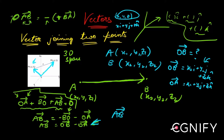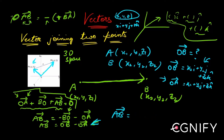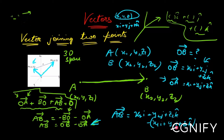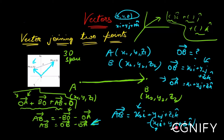What we need is AB bar, which is the difference OB bar minus OA bar. That is: (x2·i + y2·j + z2·k) minus (x1·i + y1·j + z1·k). We take components along the same direction and subtract them — x2 and x1 are both along i, so we subtract them directly.